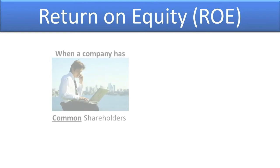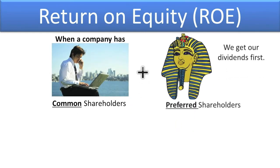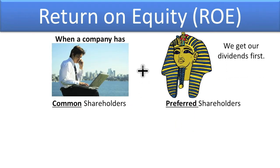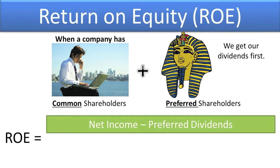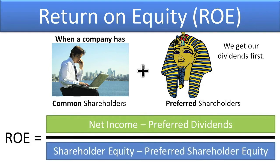For companies that have both common shareholders and preferred shareholders, the ROE formula must be modified to remove amounts related to preferred shareholders as follows: Net Income minus preferred dividends, divided by shareholder equity minus preferred shareholder equity. Net Income must first be reduced by the amount of preferred dividends to arrive at the net income left over for the common shareholders — net income minus preferred dividends.